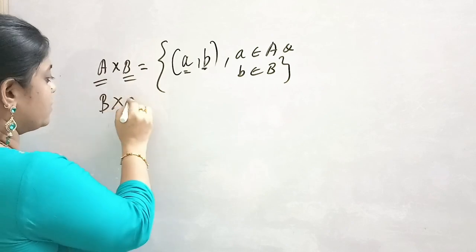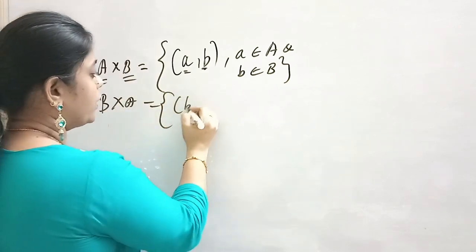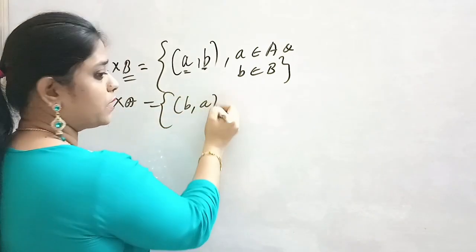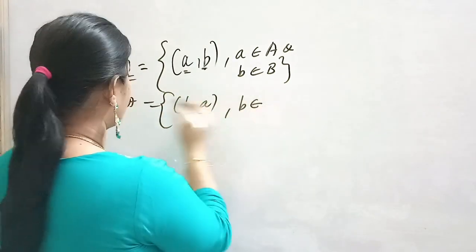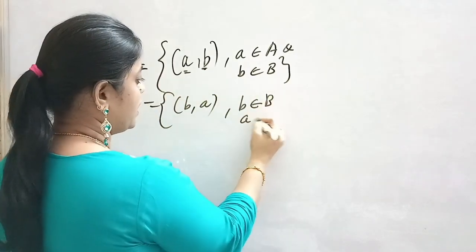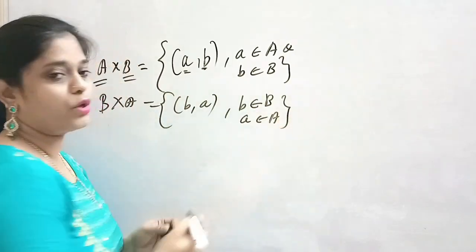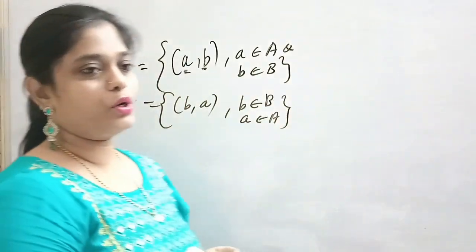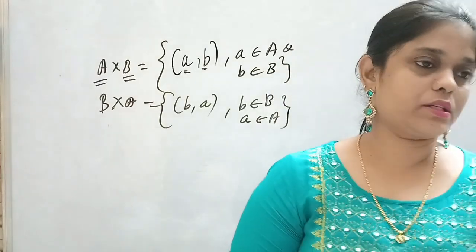Suppose B cross A: your ordered pair is (b, a). B belongs to the first set, A belongs to the second set. The order is very very important — this is the Cartesian product.